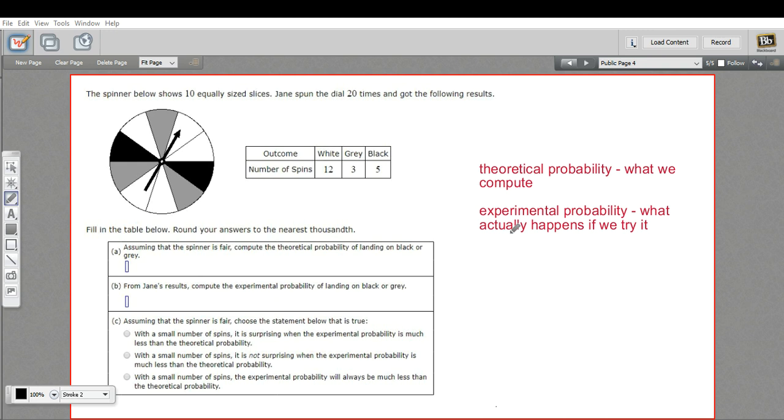However, the thing about probability is that the more you do something, the greater number of times you do it, the more likely you are to average out to that theoretical probability. So if I flipped a coin 1,000 times, I'd get a lot closer to that 50-50 than any time I flipped it two or three or four times.